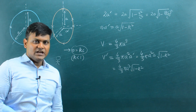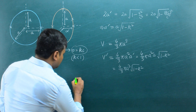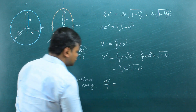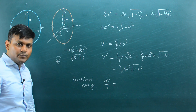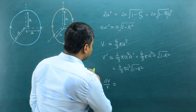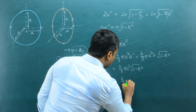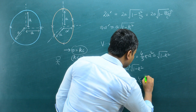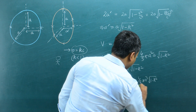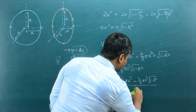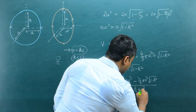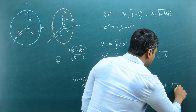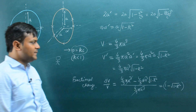To find the fractional change in volume, we calculate ΔV/V, and multiply by 100% for the percentage change. This gives: [(4/3)πa³ − (4/3)πa³√(1 − k²)] divided by (4/3)πa³. The common factors cancel, leaving ΔV/V = 1 − √(1 − k²).